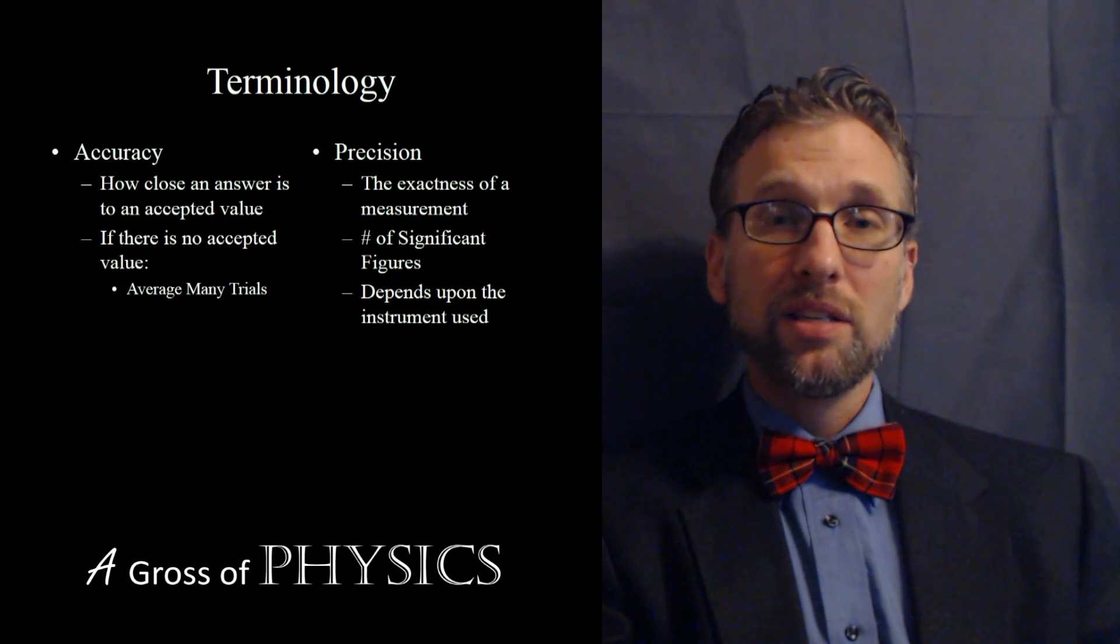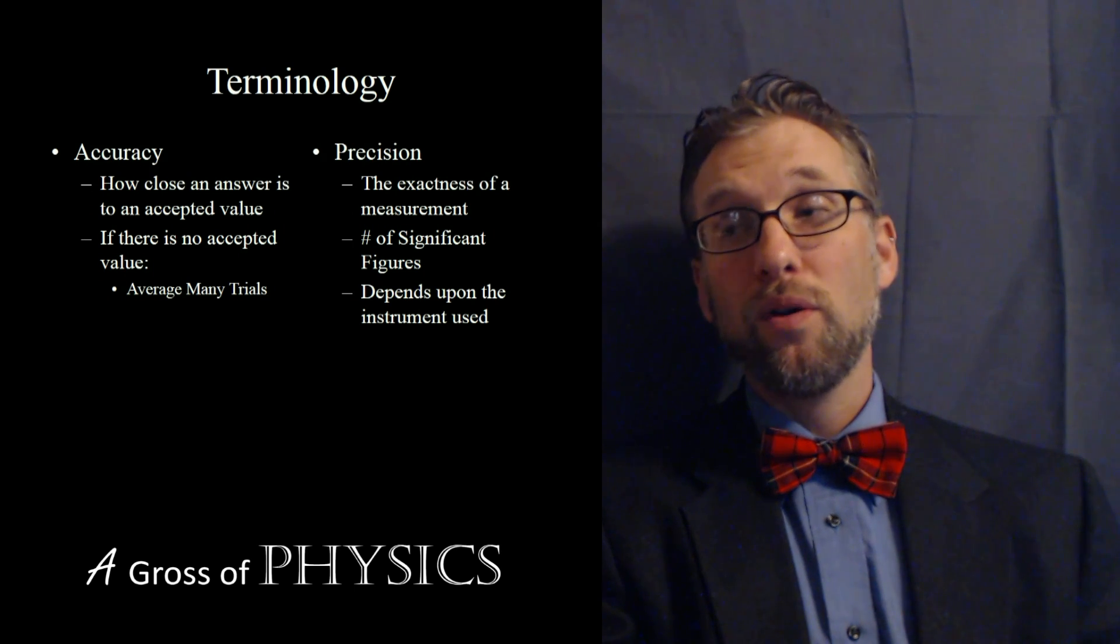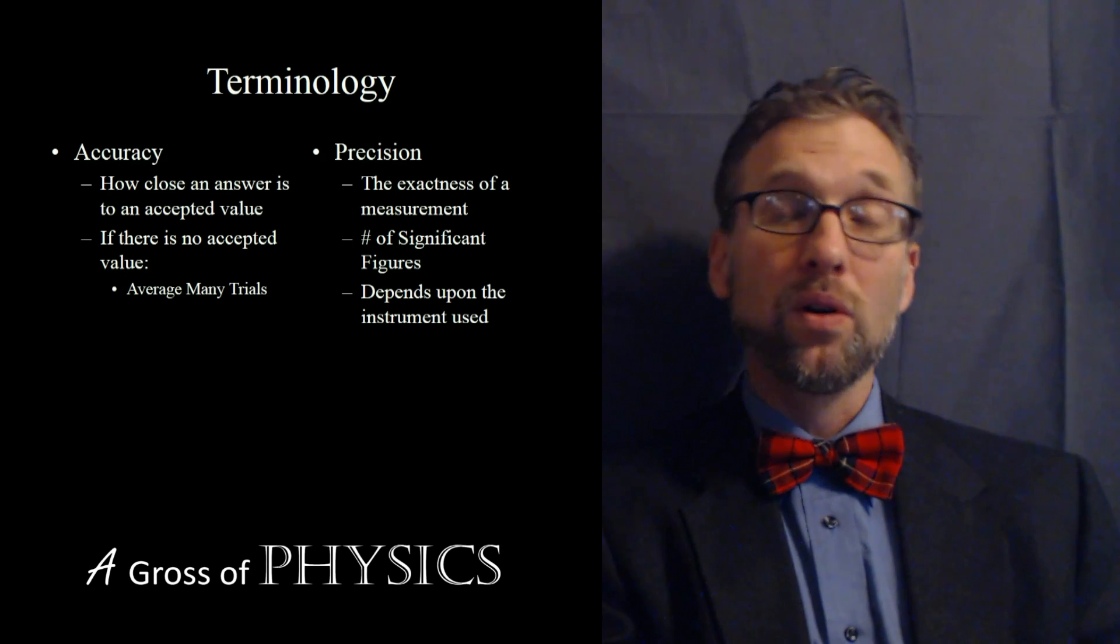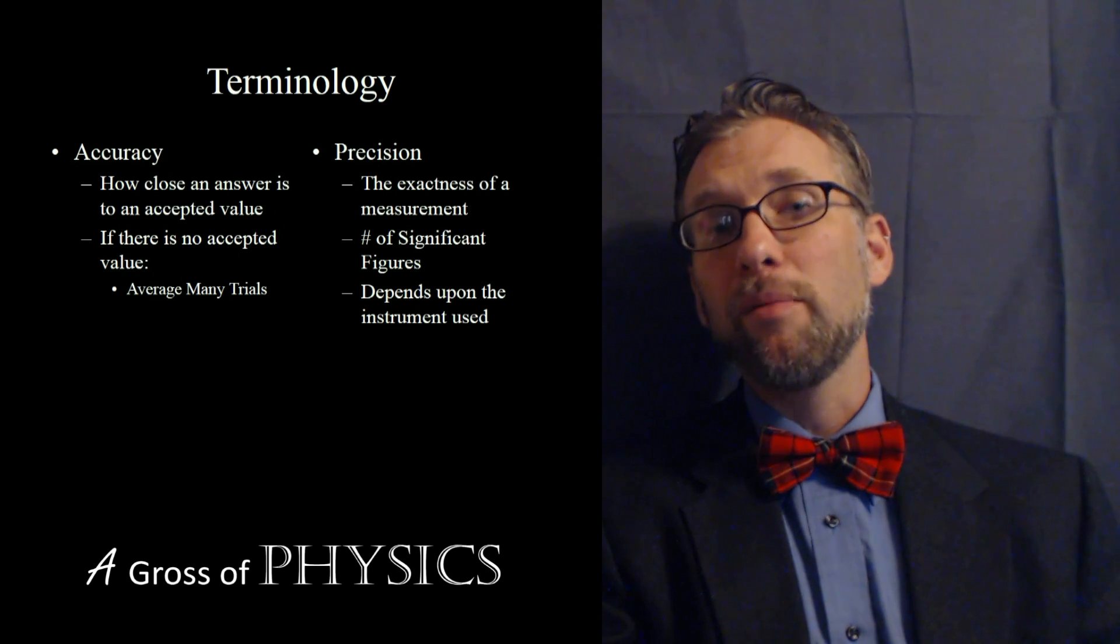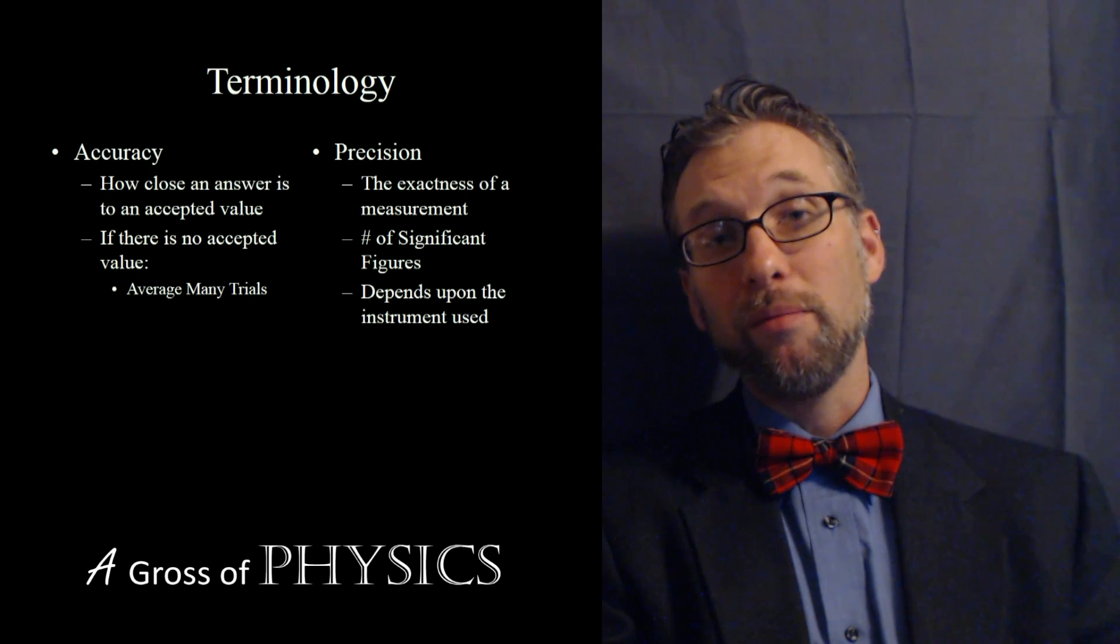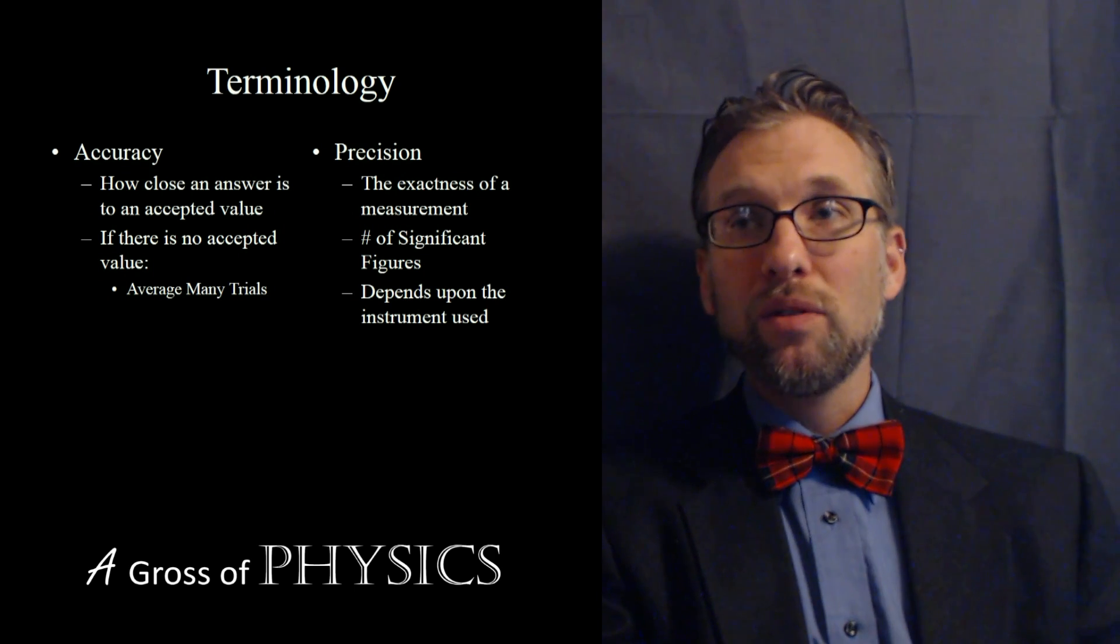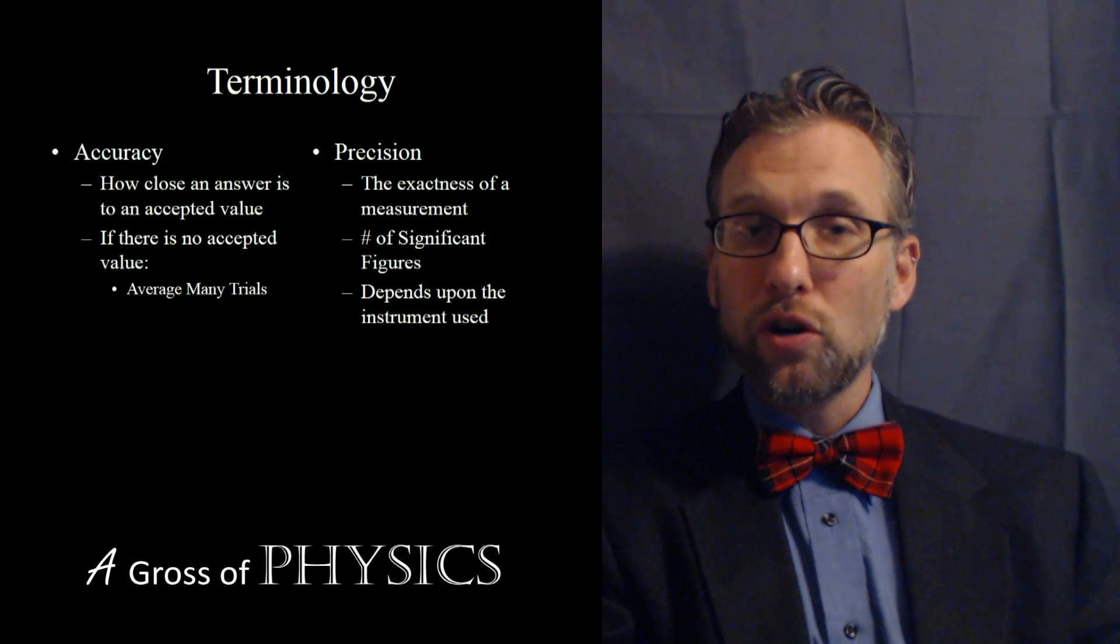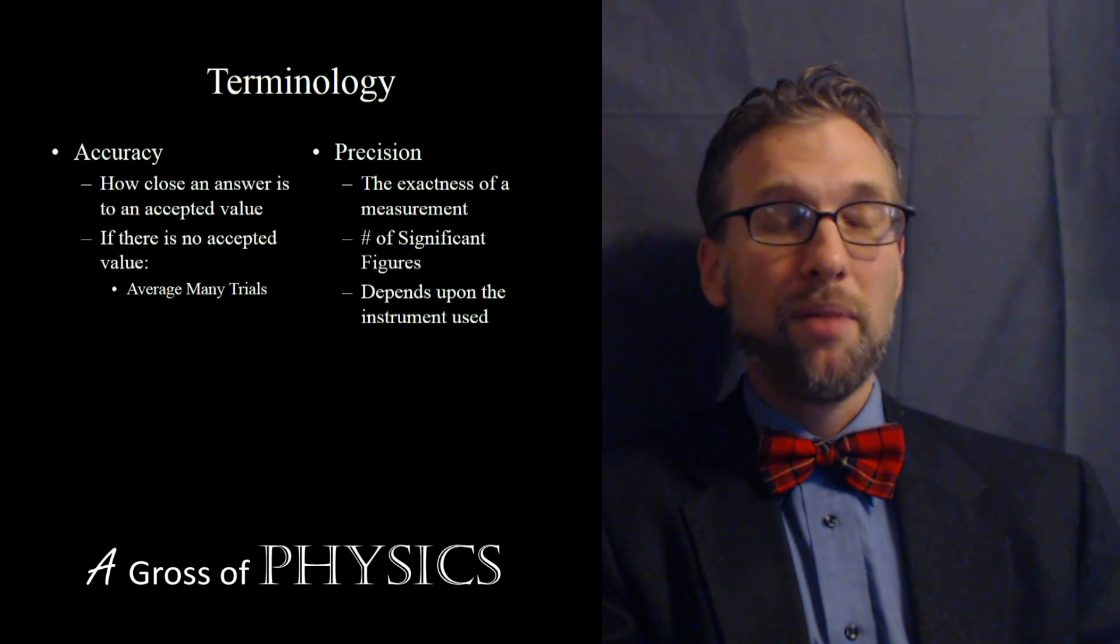For example, if you're using a centimeter ruler, we can always estimate the final value. So, if you're using a typical meter strip or a centimeter ruler, the smallest division is typically millimeters. And we're able to estimate that value past the millimeter as an accepted value that's not certain but slightly uncertain, based on how far a measurement may be.